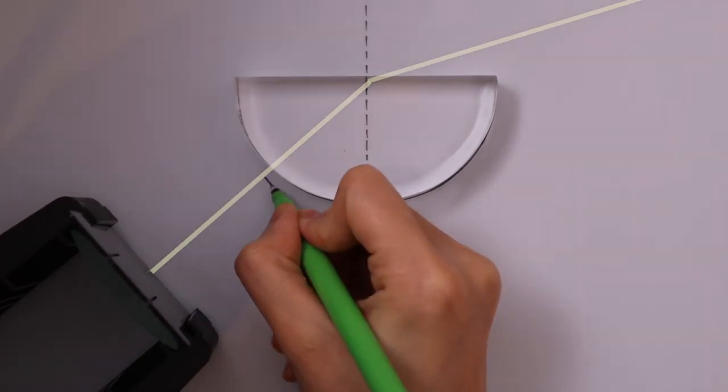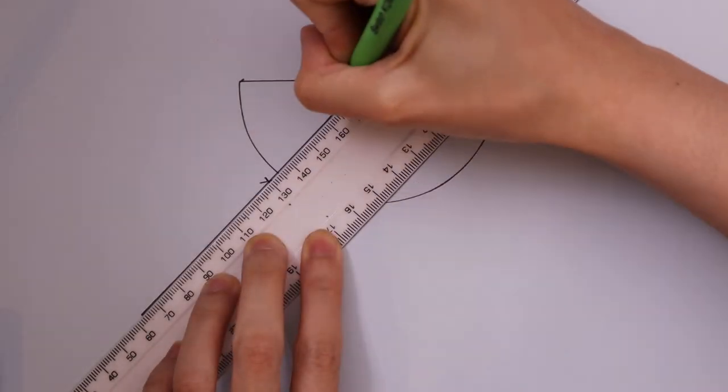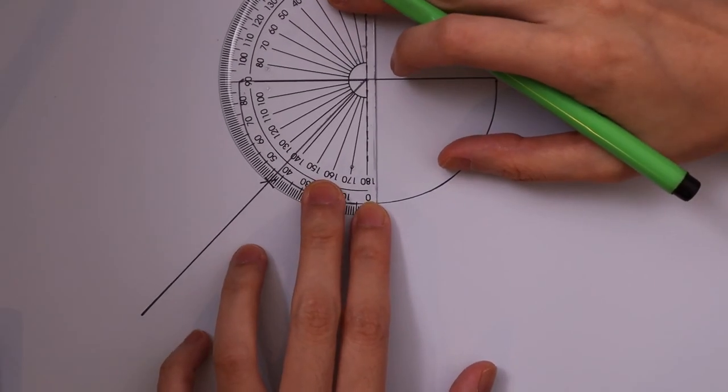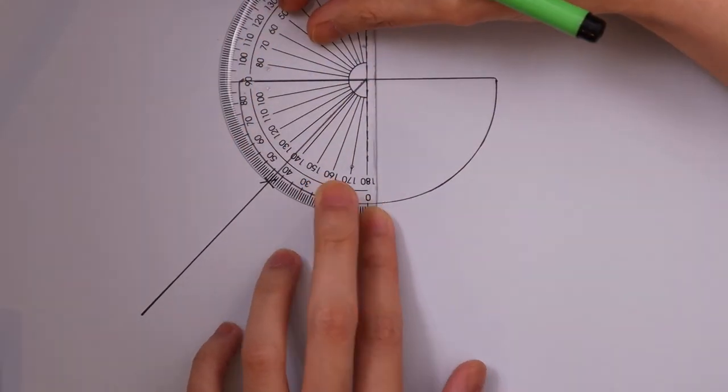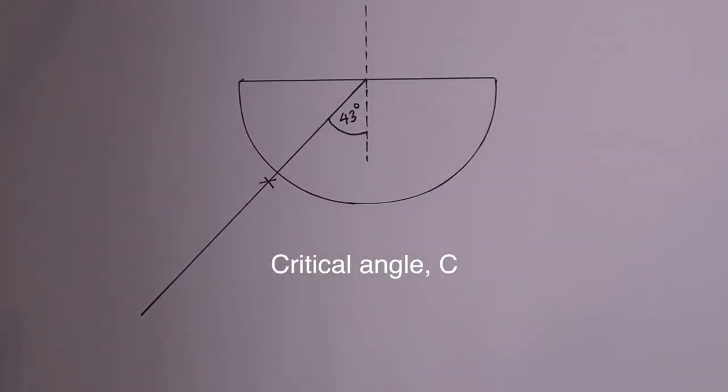Mark a point on the incident ray. Remove the block. Join the cross-up with the normal. The angle between the incident ray and the normal is the critical angle. Measure it using the protractor. So I've worked out the critical angle of my perspex prism is 43 degrees.